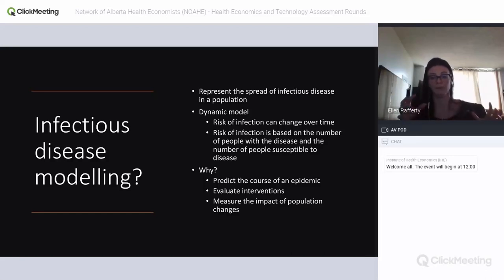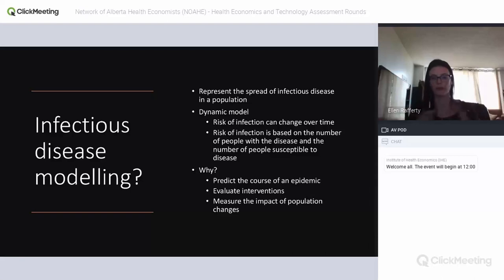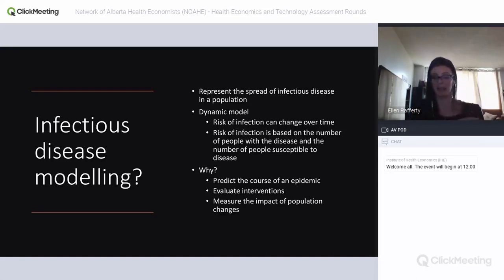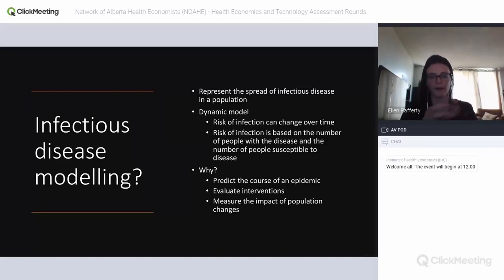It's essentially a positive feedback loop: more people infected leads to a higher rate of infection, causing exponential increases in disease. You can also see negative feedback loops with vaccination — people vaccinated leads to fewer people infected, which leads to a decrease in the rate of infection. The fact that all these factors are interconnected makes it a dynamic model.